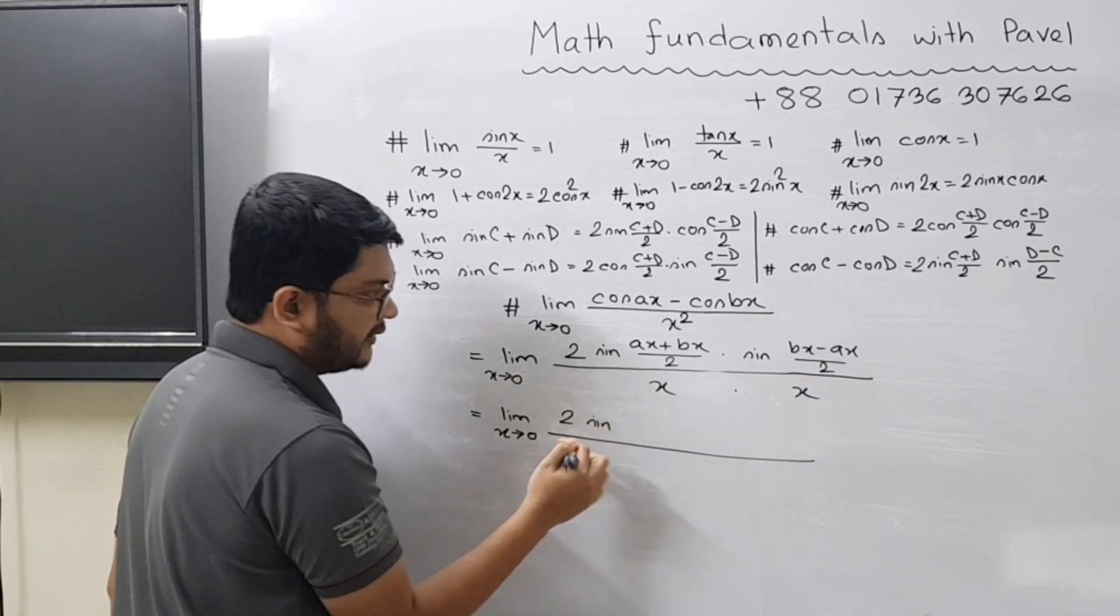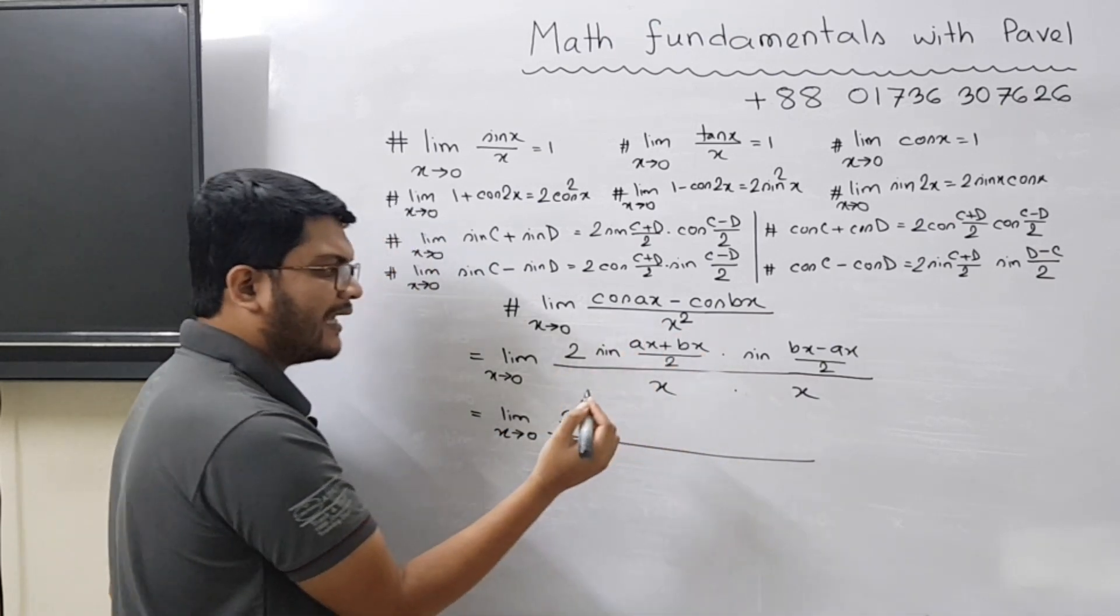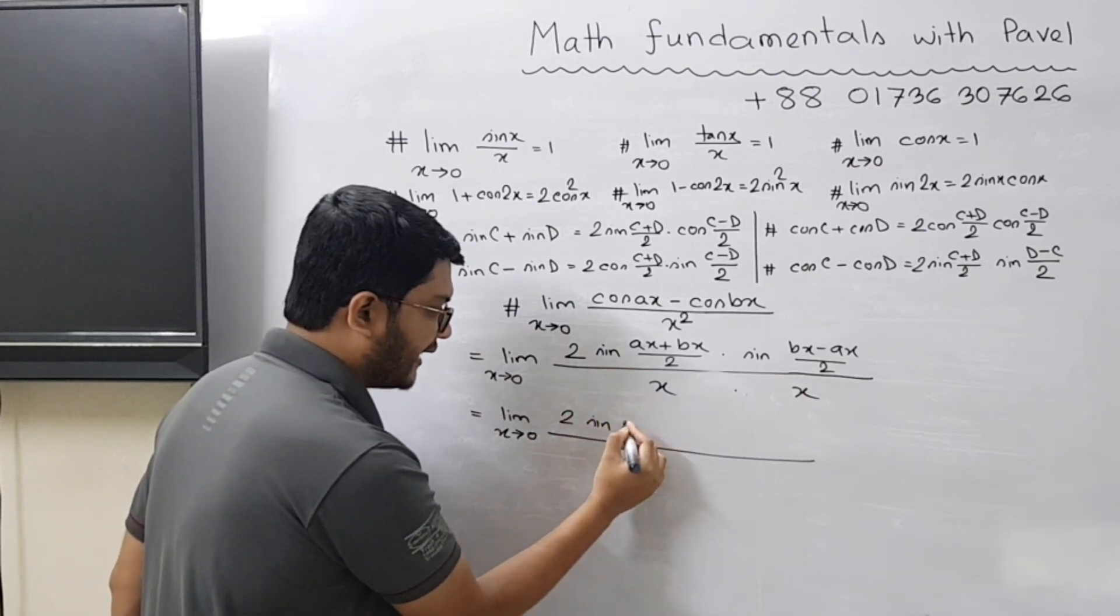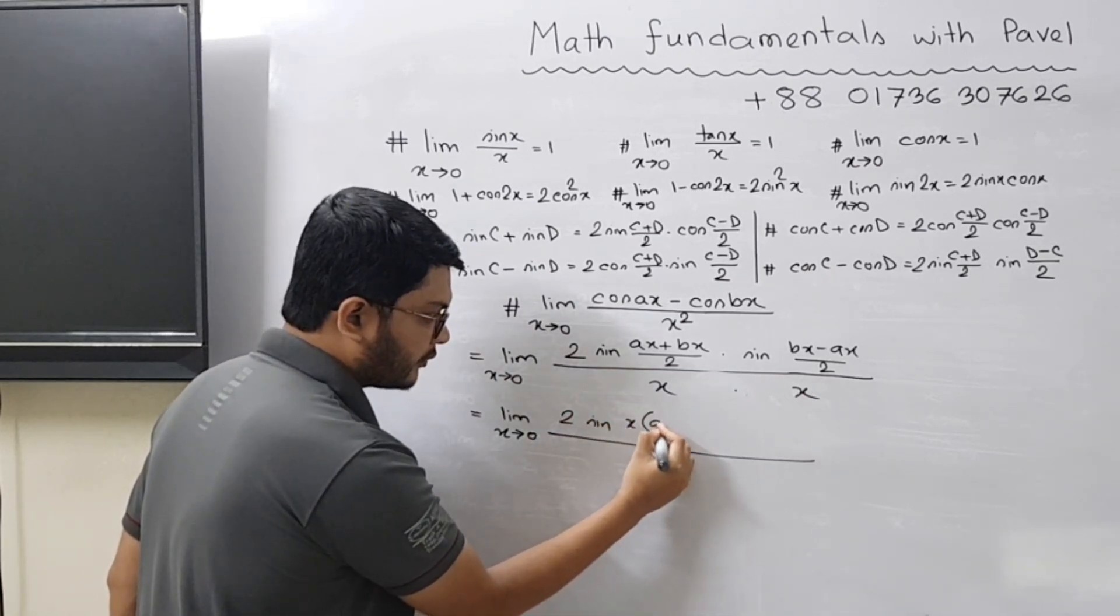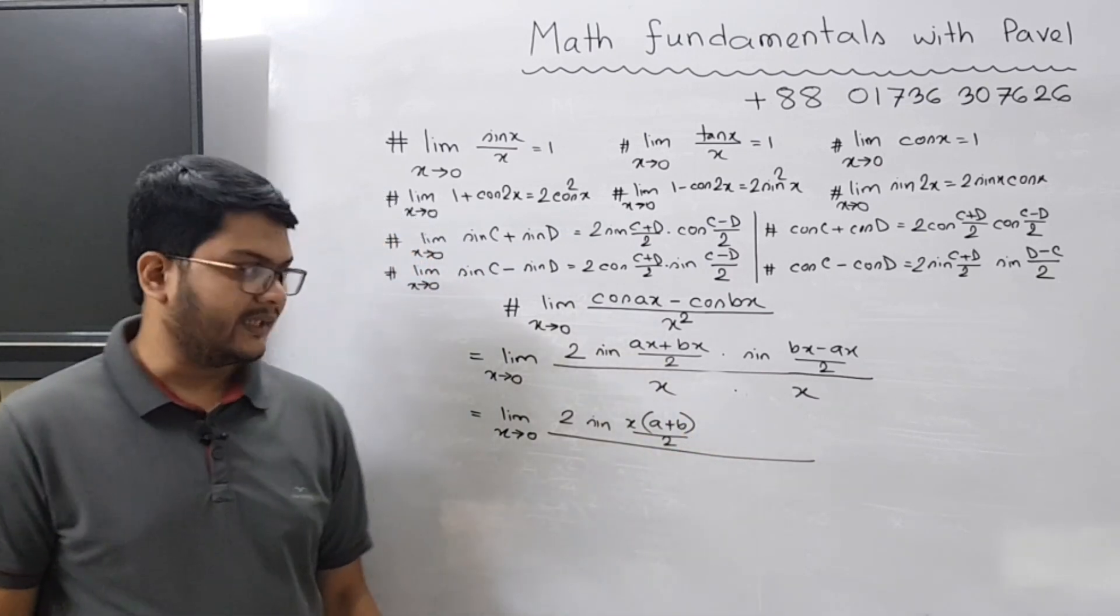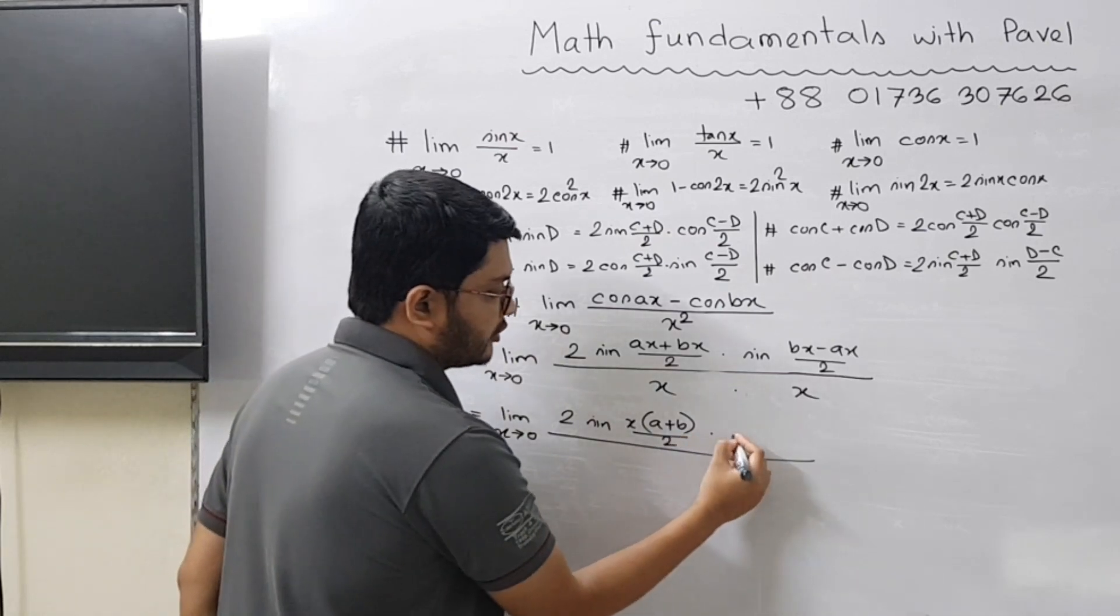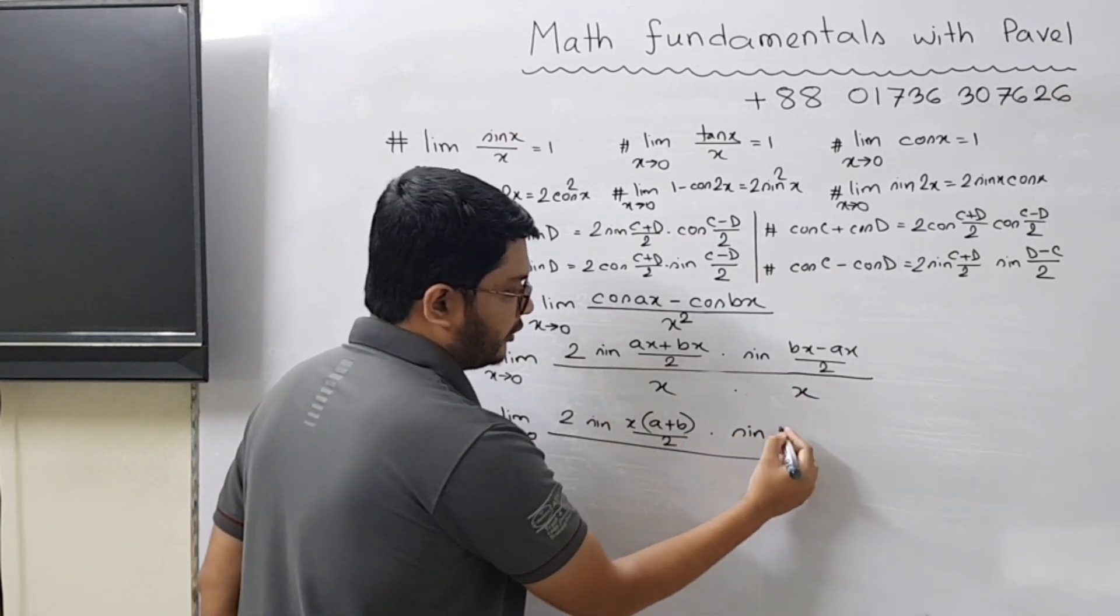How do you organize? You have ax plus bx, so in both terms you have x, so you can take x as common. If you take x times a plus b by two, you can write that. So it would become ax plus bx times sine.